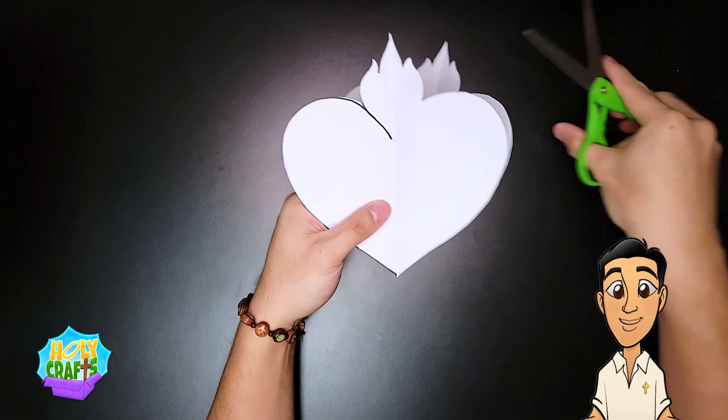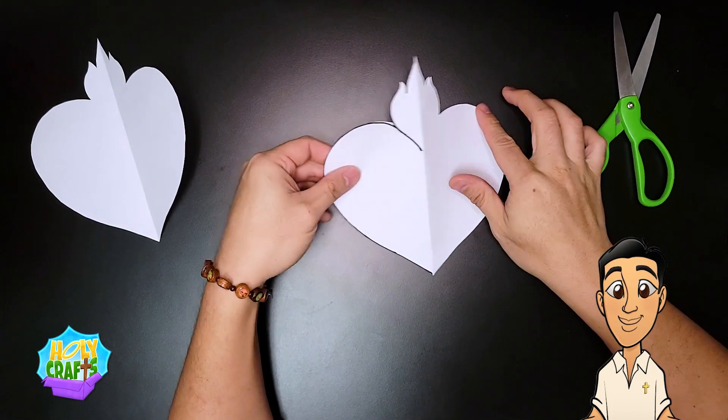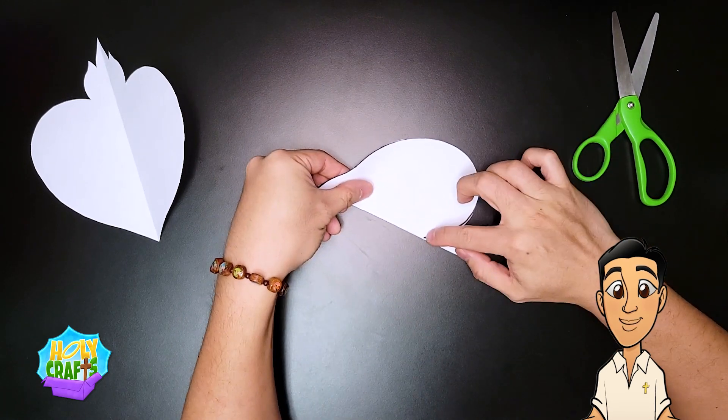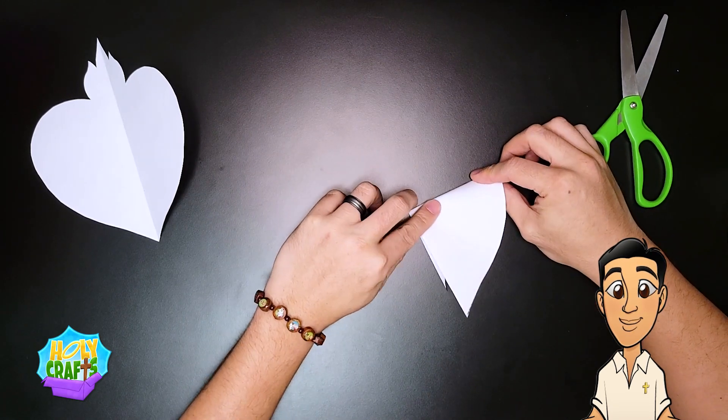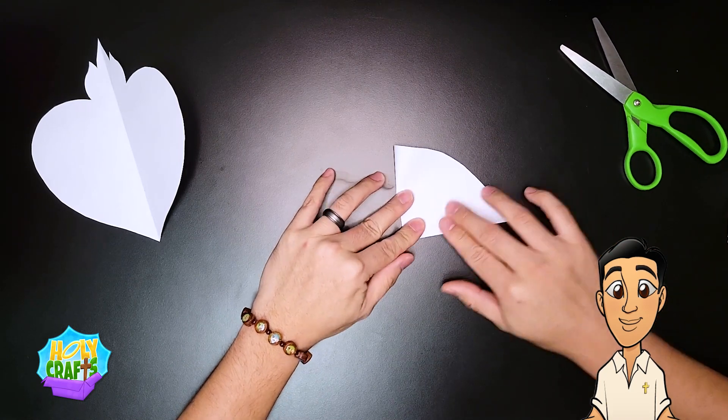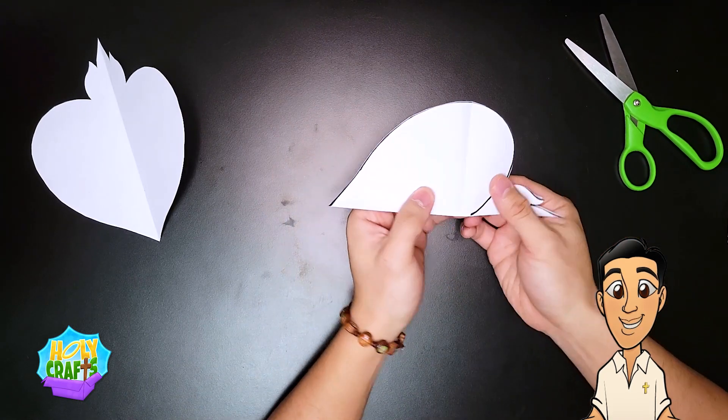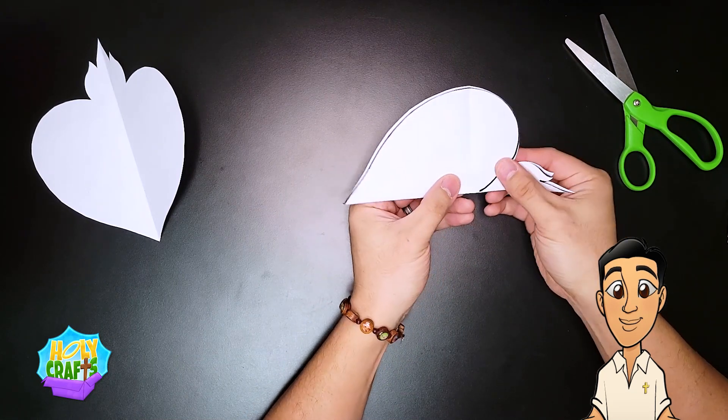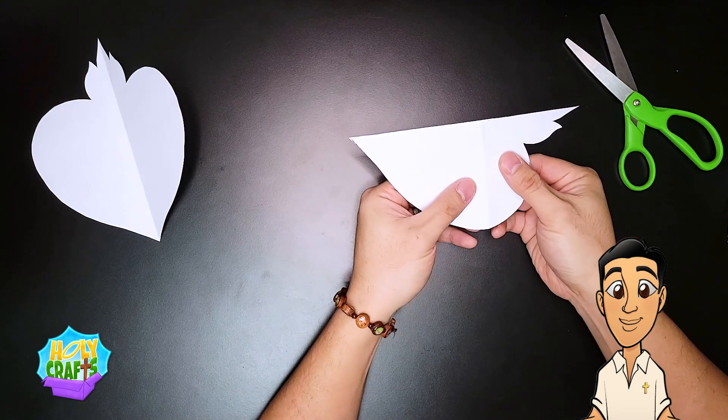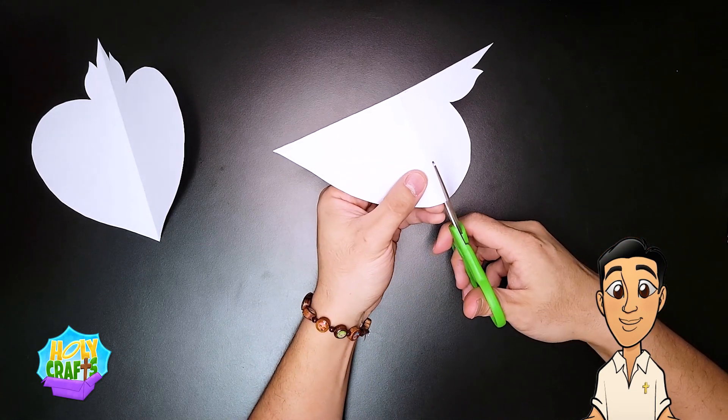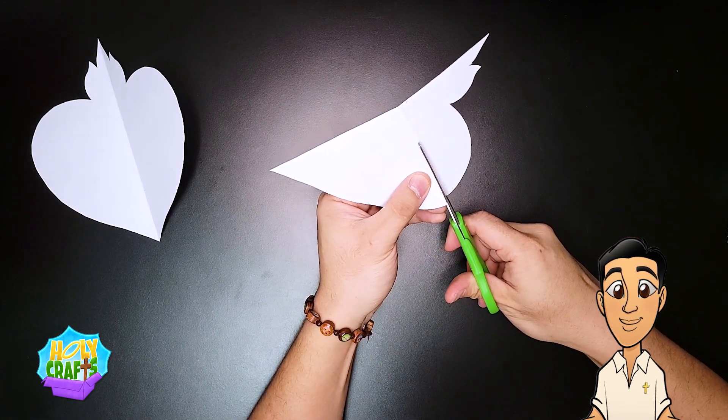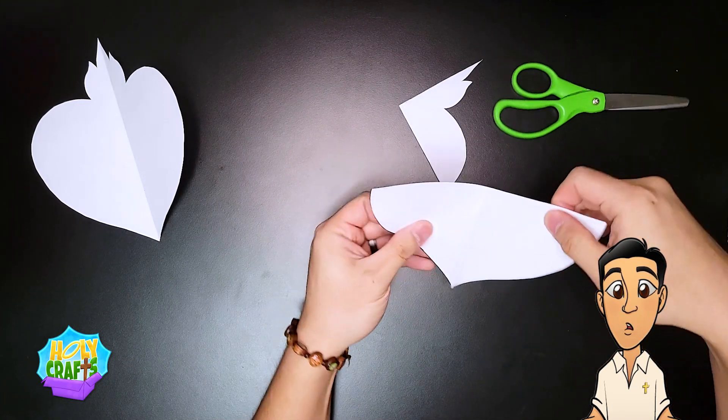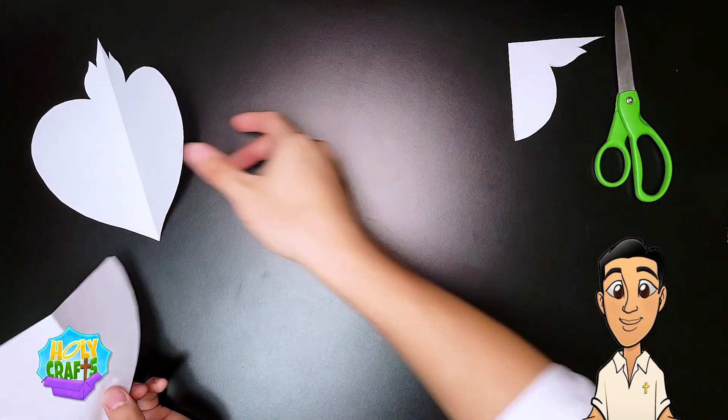Now we're going to make the opening. On one of the hearts, we're going to fold it right in the middle. That shows us where the crease is. And along the crease, we're going to cut straight across. Now we have our opening. Looks like a little pocket.